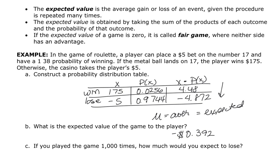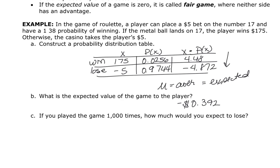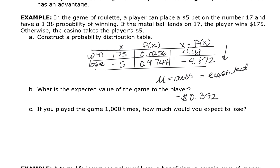You might think you're only out 39 cents, but that's what you're expected to lose on average for every game you play. Every time you lose you lose five bucks; every time you win you win $175. So if someone played that roulette wheel 1,000 times, the expected value would be $392 gained for the company — and you would expect to lose $392.